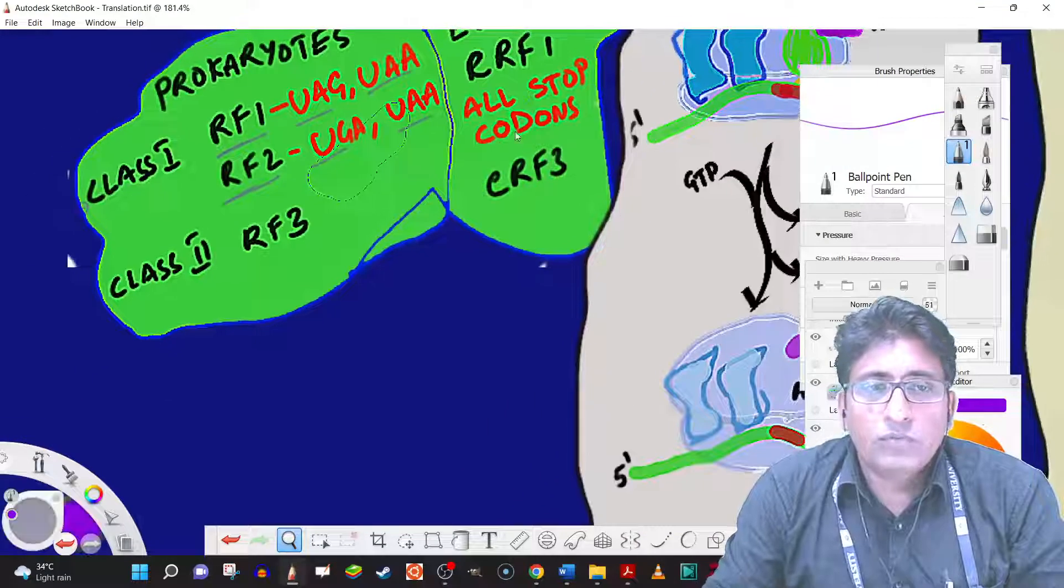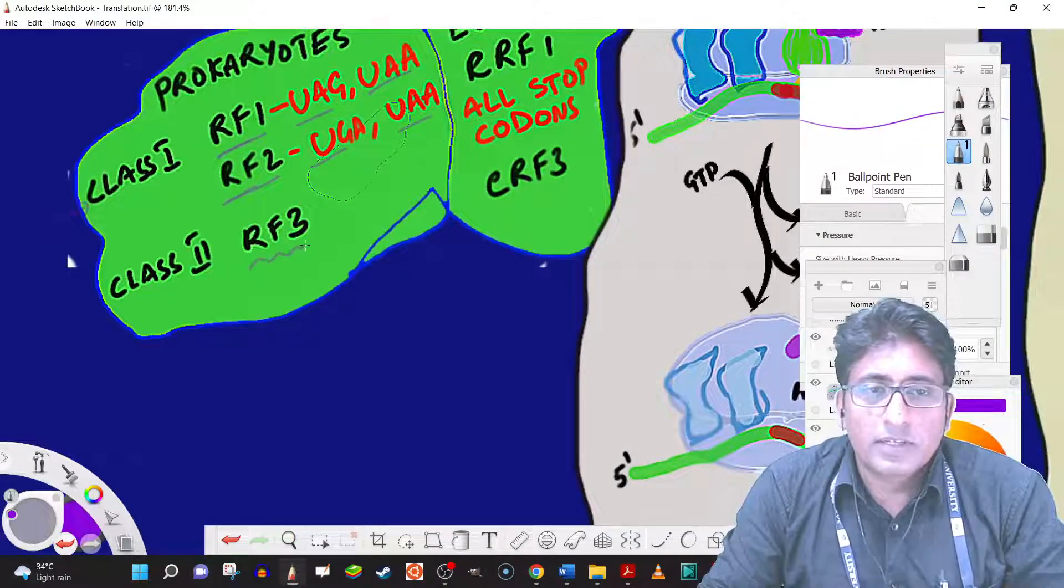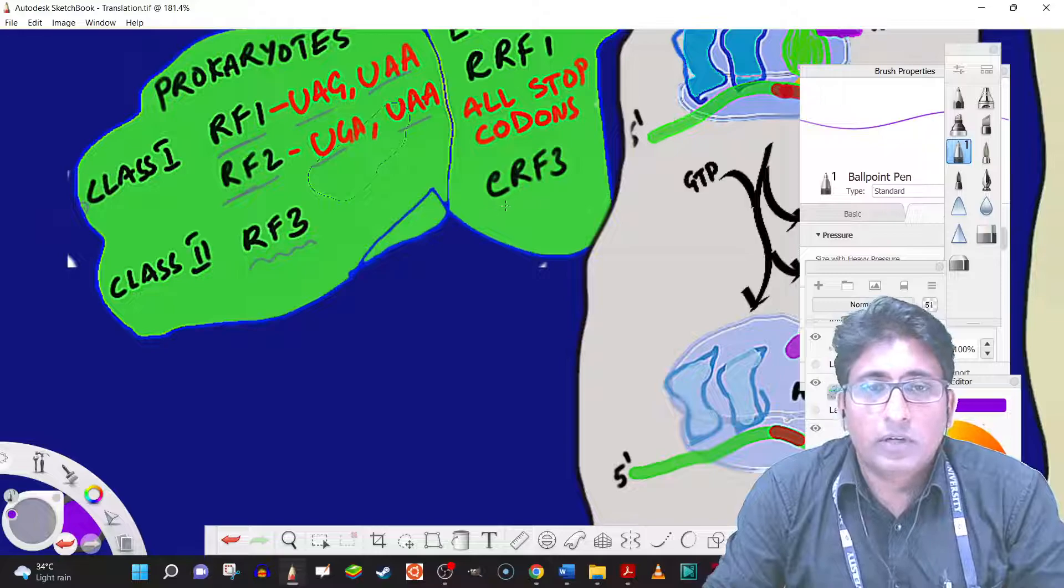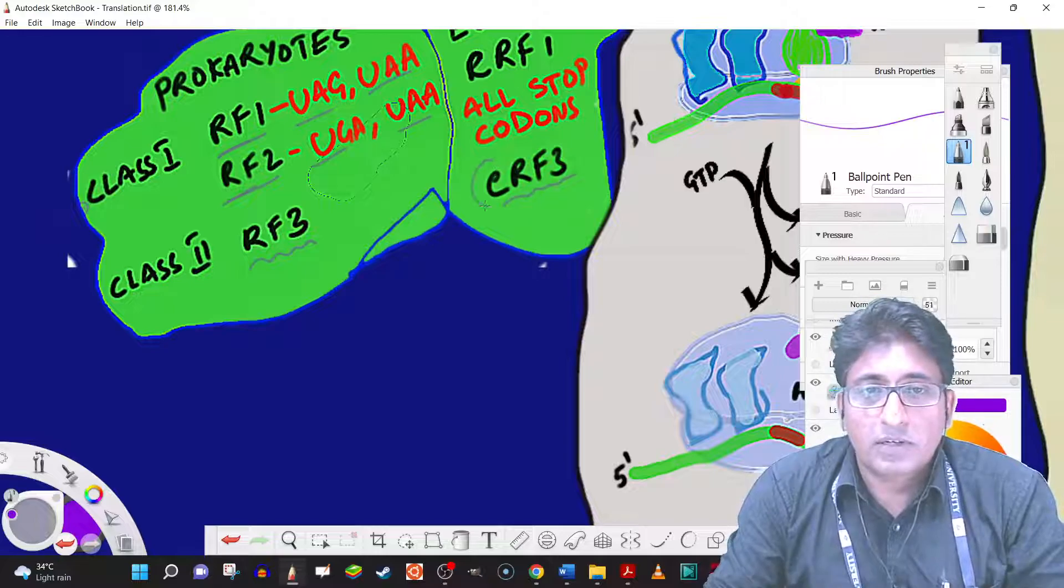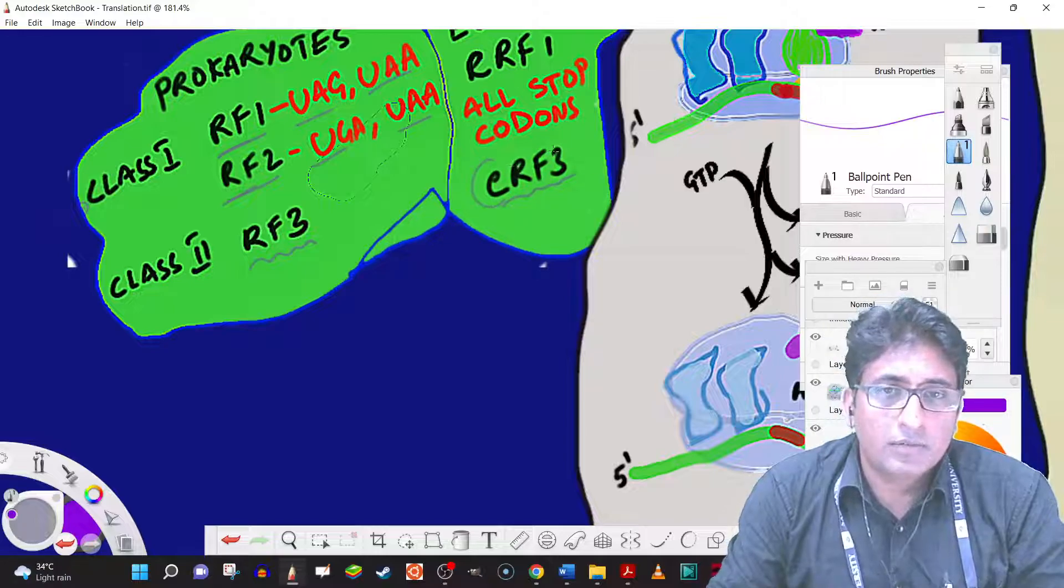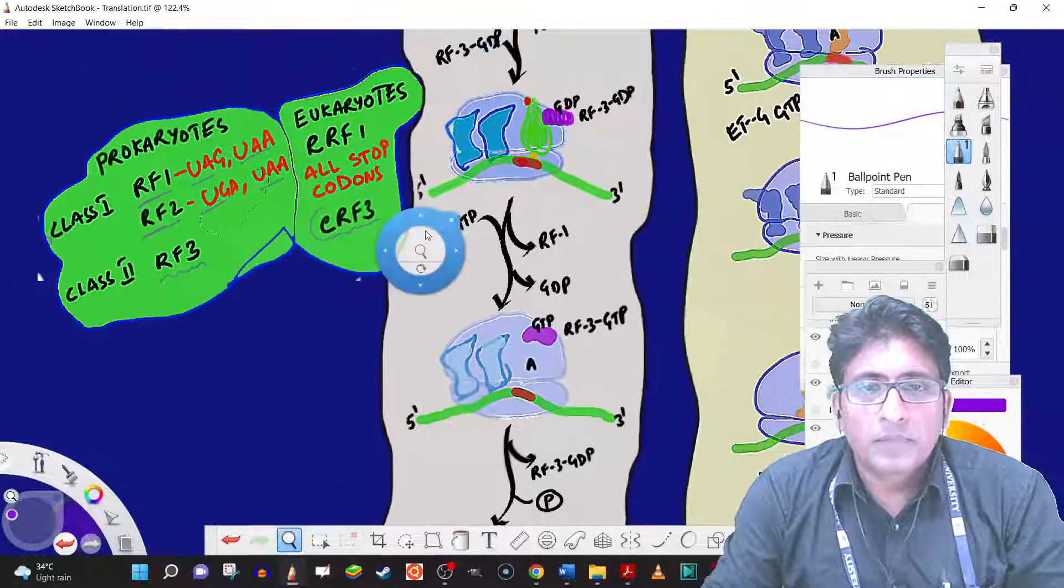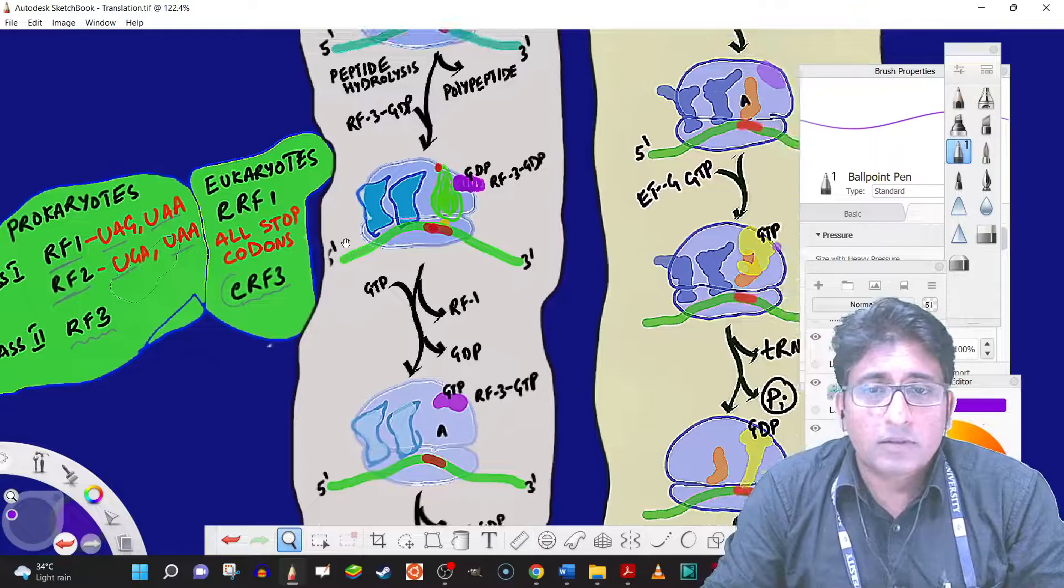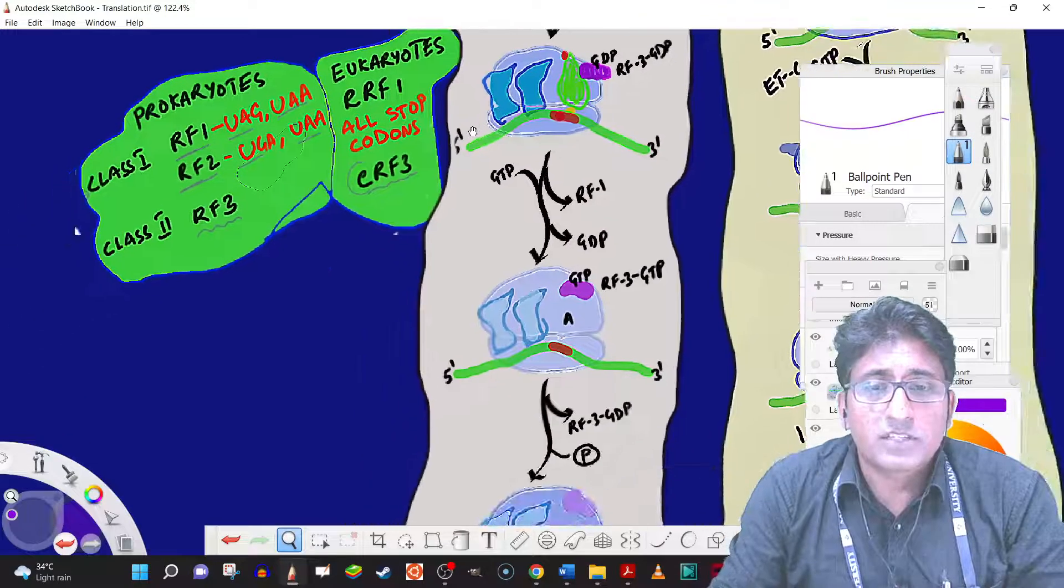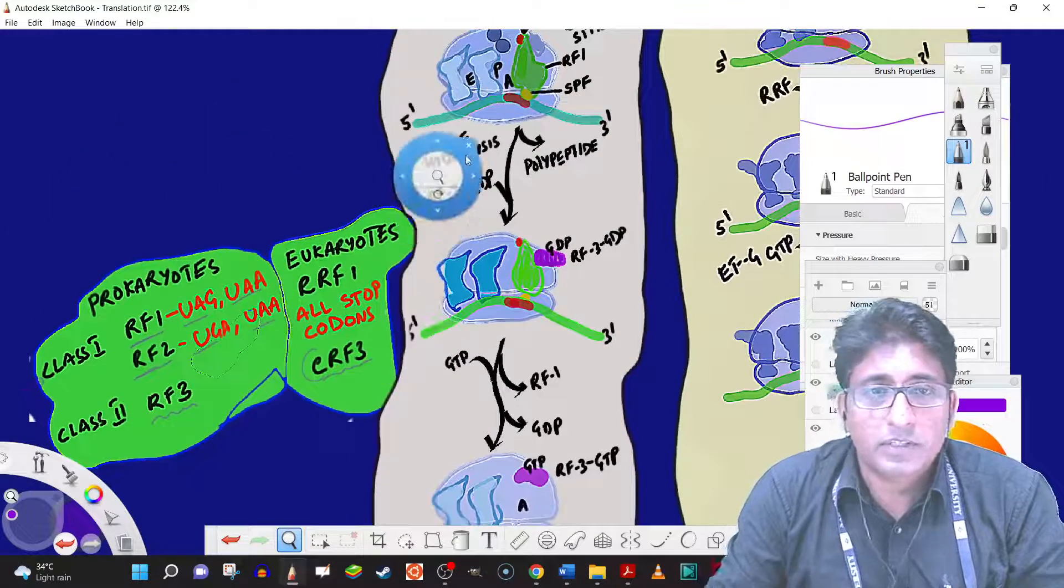And in the class 2, we have something called as RF3. And in eukaryotes, it's the same way except we have a prefix like ERF3. And we also have another factor that is called as the ribosome release factor, which we'll have a look at in a while.